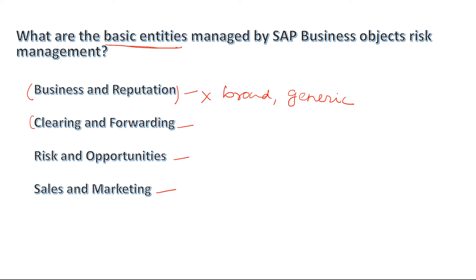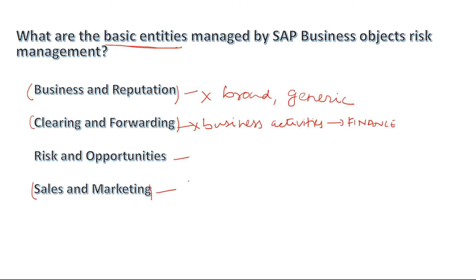The next option is clearing and forwarding. Clearing and forwarding are business activities mostly related to the finance module, so this is also not the right answer. Similarly, sales and marketing is very broad and generic in nature, so that is also not the correct answer choice.